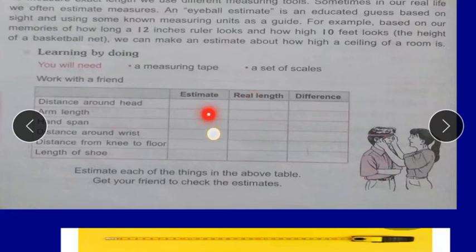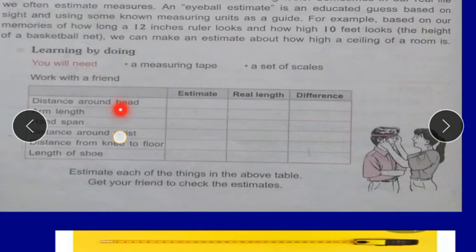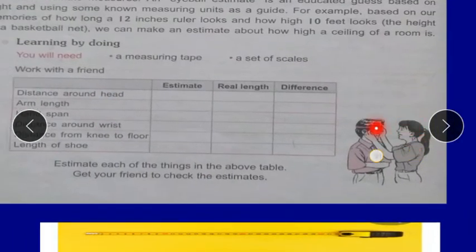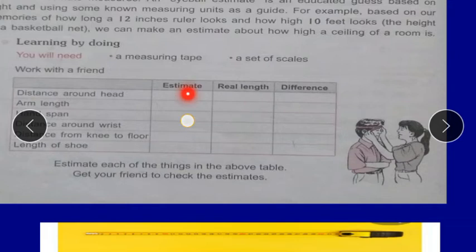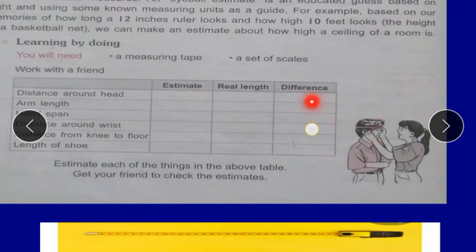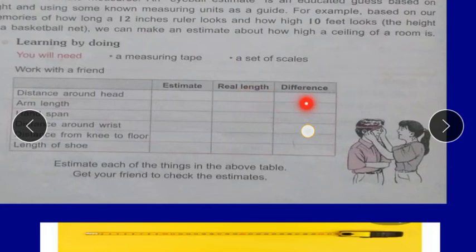This is a practical activity for you. Distance around the head — this girl is measuring the head of a boy. You can take a measuring tape this way to measure the length around the head; that will be the real length. The number you get is the real length. An estimated length means what you are thinking — you are seeing the head and, according to your memory, guessing its length. That is estimation. The difference is that you subtract the estimated length from the real length to get the difference.